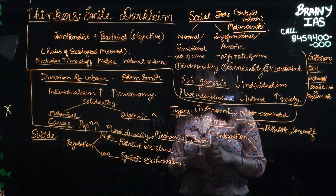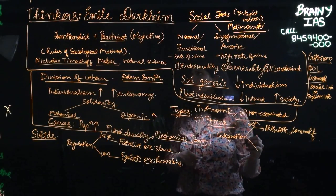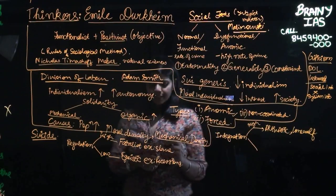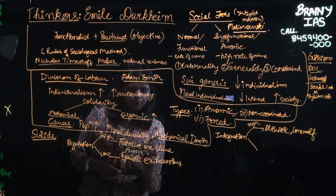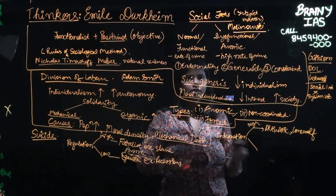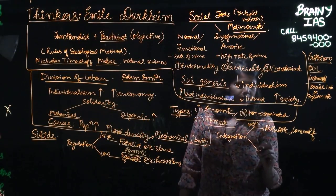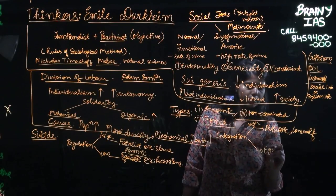Now then we talk of, so here it's basically not egoistic, it is anomie, anomie suicide, because there is an anomie, there is no regulation. Now then comes an egoistic suicide. When?